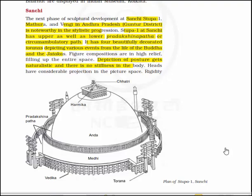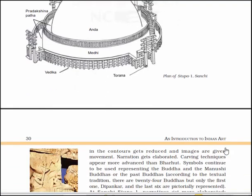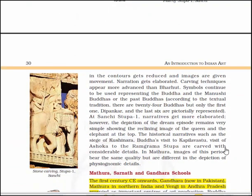Let's discuss this figure. The circular or round structure is known as Anda, above which there is a Harmika, and above that the Chatri. Below are the Pradakshinapatha, the structure called Medhi, the railing known as Vedika, and the Torana. Rigidity in the contours gets reduced and images are given movement.